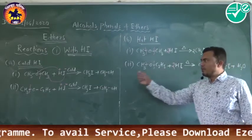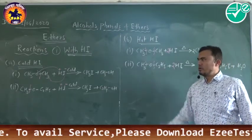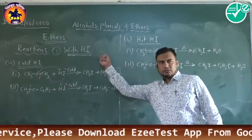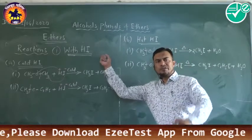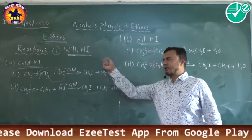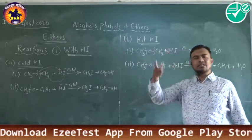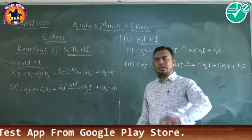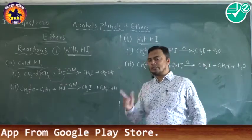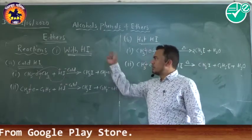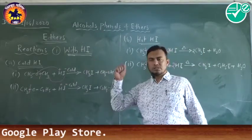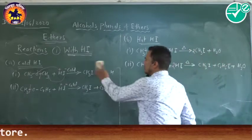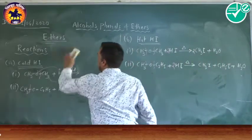This is the first reaction of ethers — with hydriodic acid. Similarly, ethers also react with hydrobromic acid and hydrochloric acid, but those reactions are slow compared to HI.